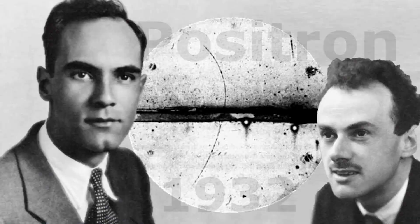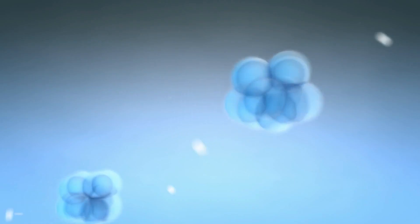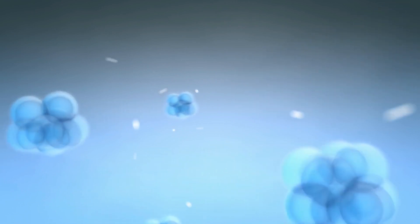In 1932, a man named K. Anderson discovered the infamous anti-electron. He called it the positron, which means positive electron. Dirac was right all along.